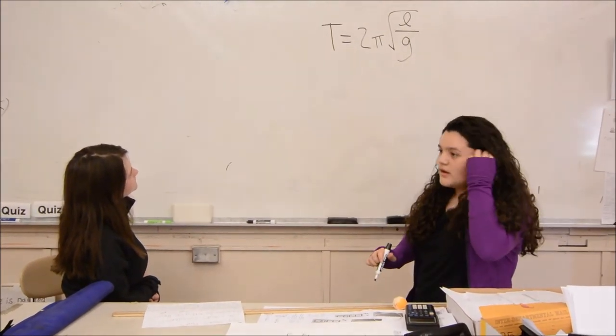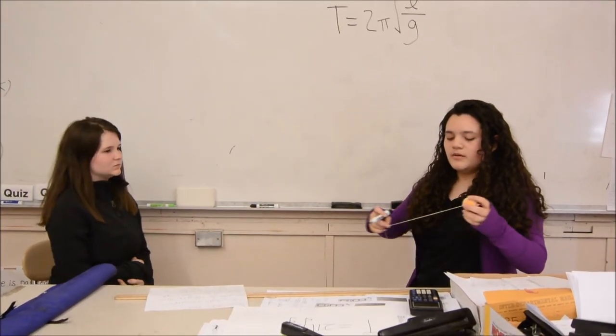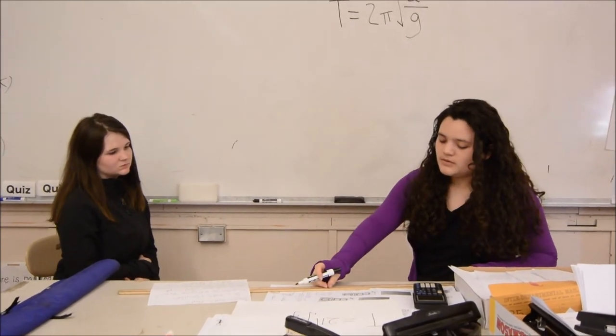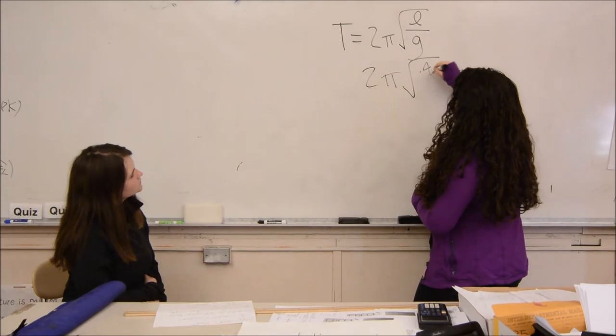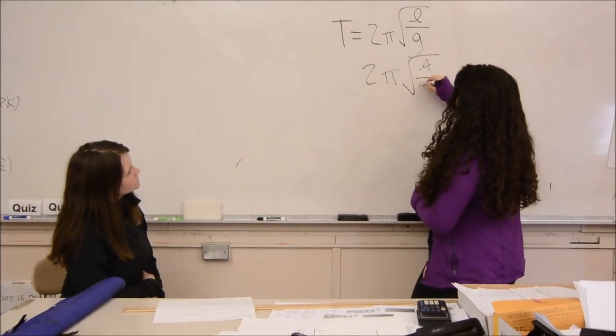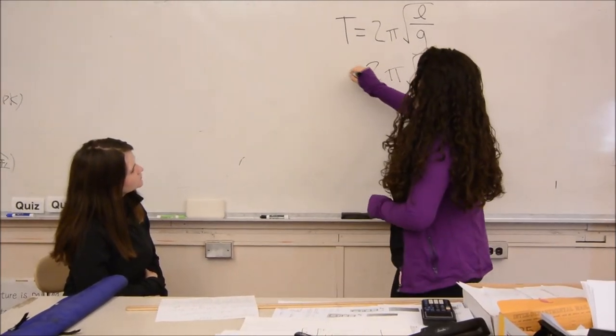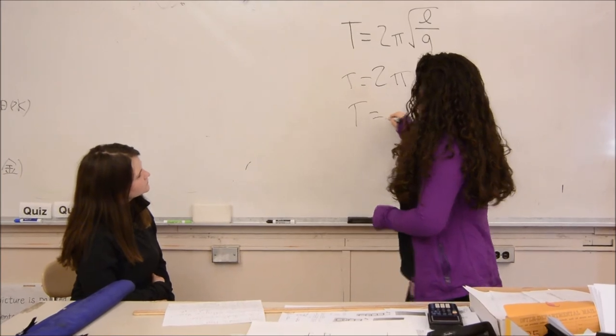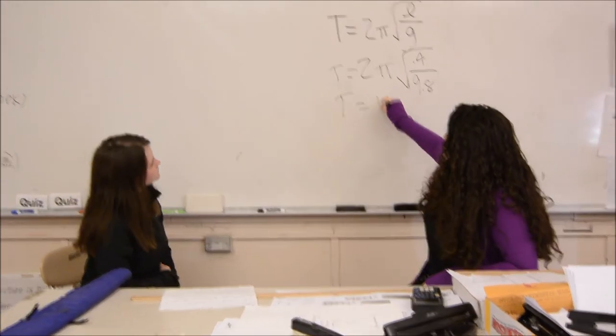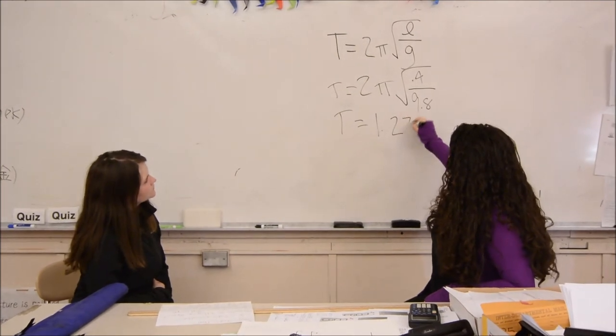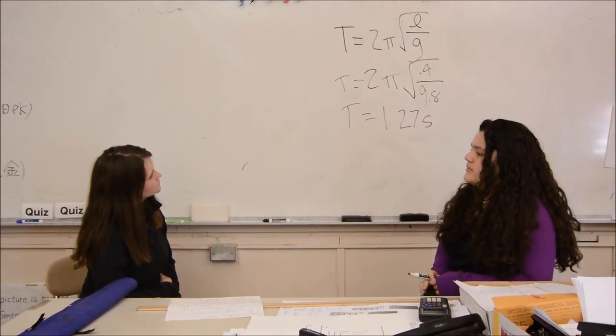How is that going to solve for that? If you wanted to solve for this pendulum, you would take the length of the pendulum, which is about 0.4 meters, over gravity, which is 9.8. And then if you do that with the calculations on the calculator, you would get 1.27 seconds as the period.